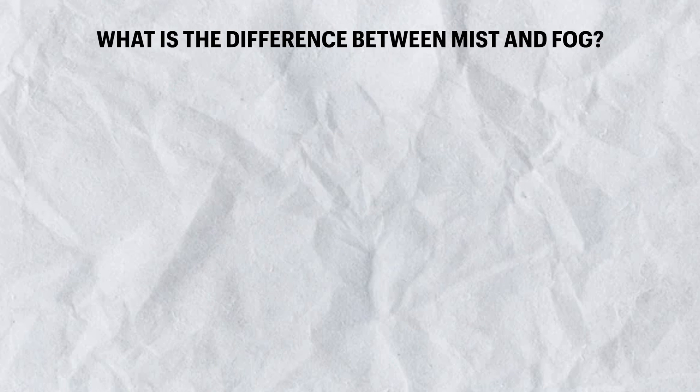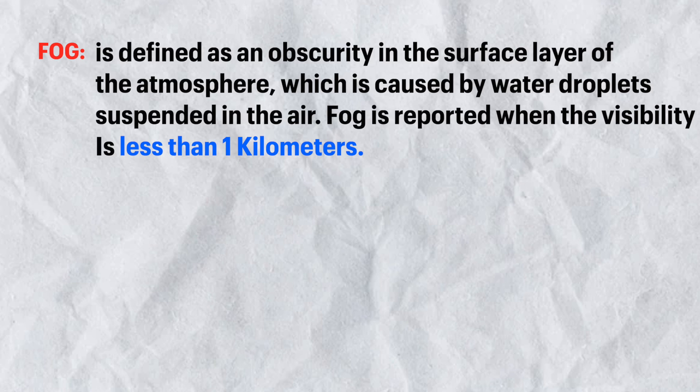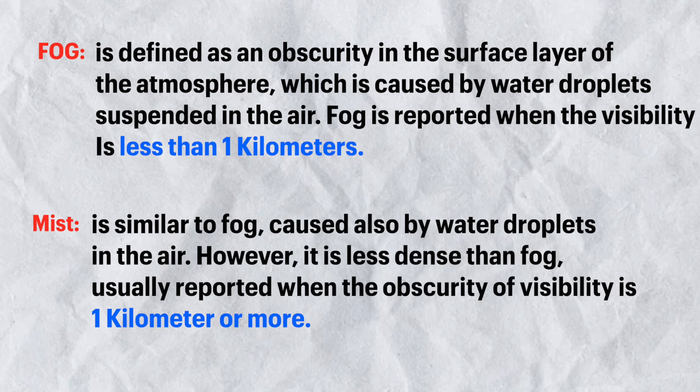Now let's look at the difference between mist and fog. The answer is quite simple — the difference lies within the density of the obscurity. Fog is defined as an obscurity in the surface layer of the atmosphere caused by water droplets suspended in the air, and is reported when visibility is less than one kilometer. Mist, on the other hand, is similar to fog and is also caused by water droplets in the air, but it is less dense and is usually reported when visibility is one kilometer or more.